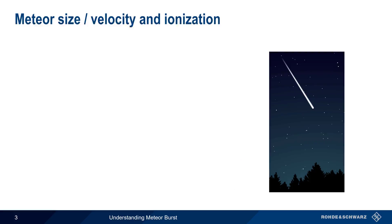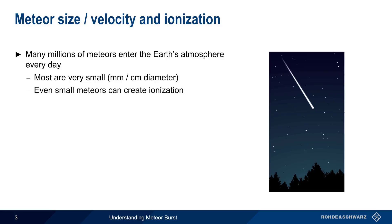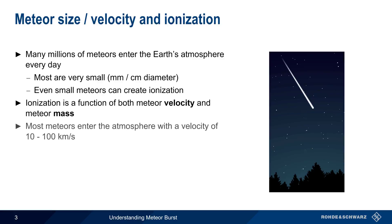Although not normally visible to human observers, many millions of meteors enter the Earth's atmosphere every day. Most of these meteors are very small, on the order of less than a millimeter to less than a centimeter in diameter. However, even small meteors are capable of creating ionization. The ionization created by a meteor is a function of both its velocity as well as its mass. Most meteors enter the atmosphere at very high speeds, typically tens of kilometers per second, and higher speed meteors create higher ionization.